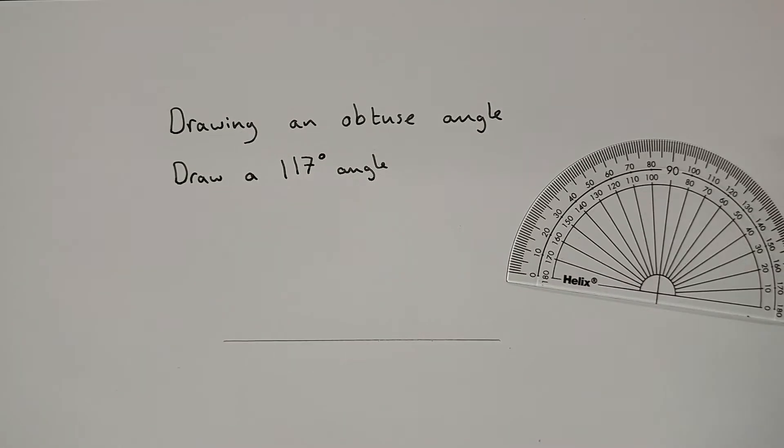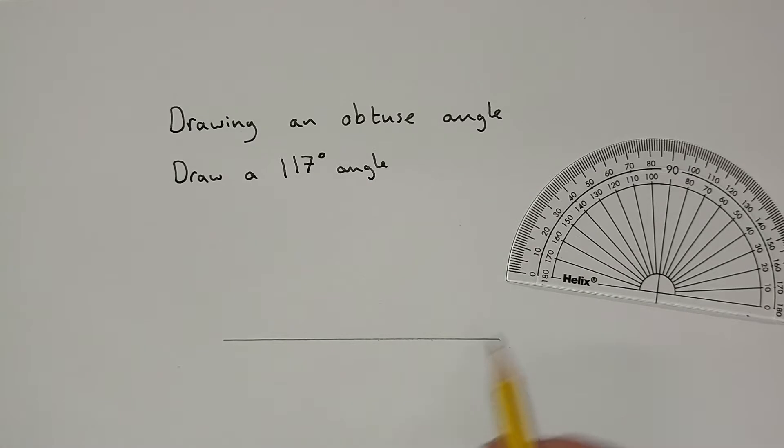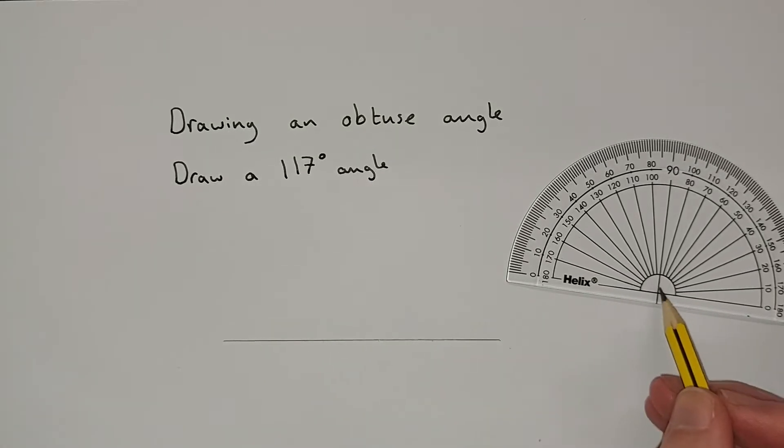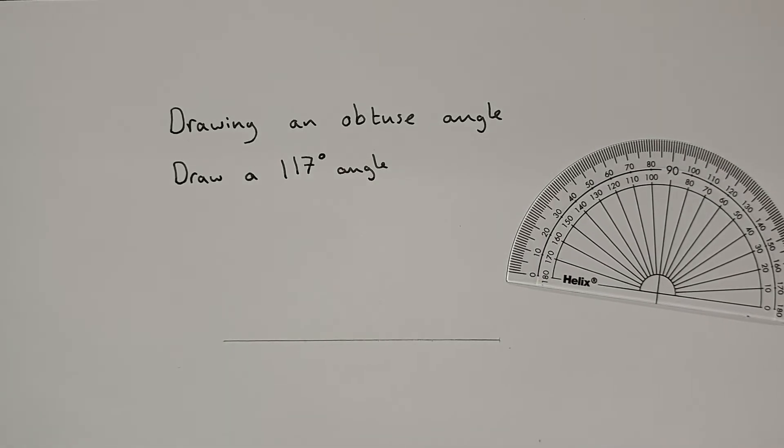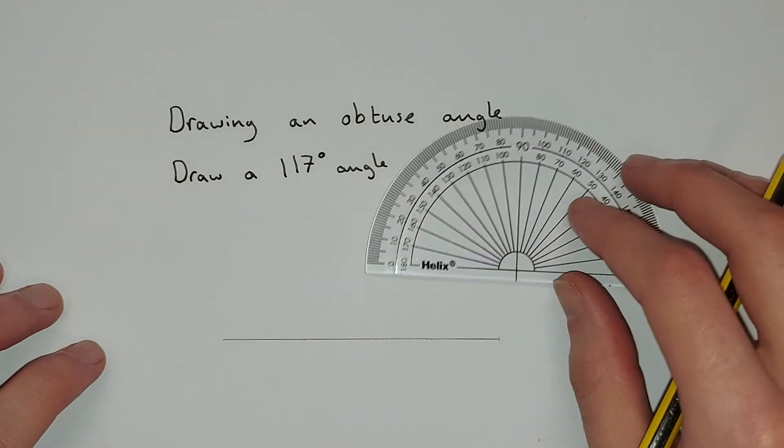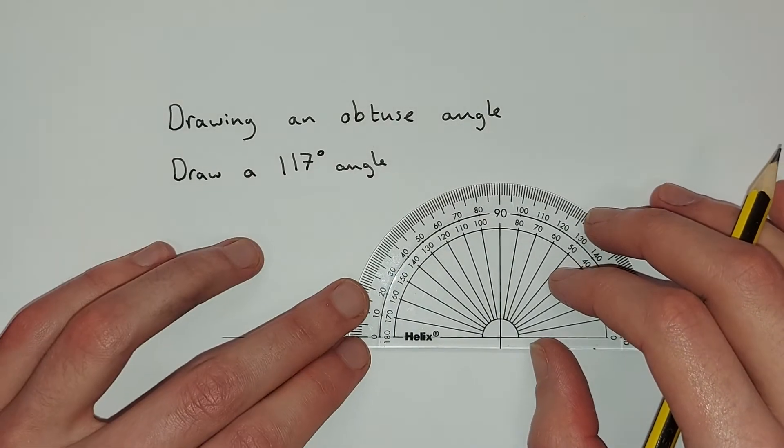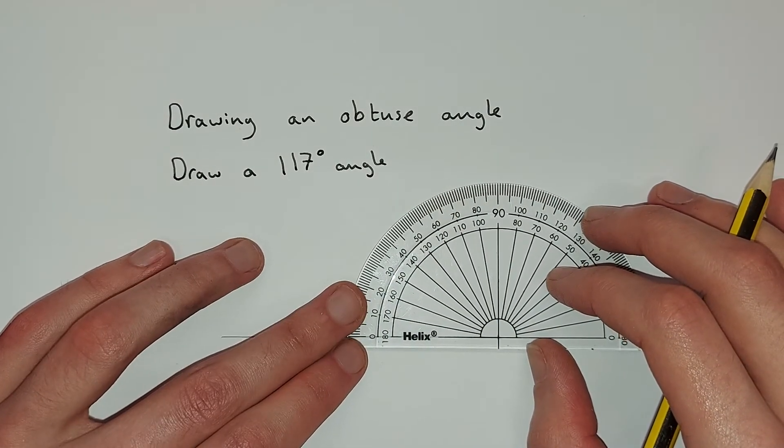I'm going to take my protractor and make sure that this line along the base is in line with this, and that where this cross is at the bottom of the protractor is in line with this vertex, or end of the line which will end up being a vertex. So we're going to line that up as best as we can.